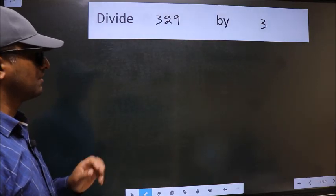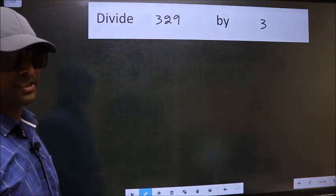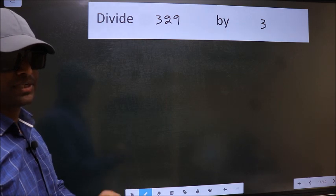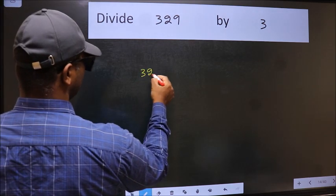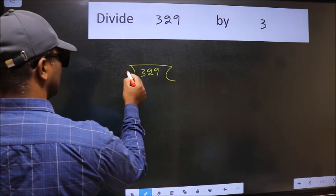Divide 329 by 3. To do this division, we should frame it in this way. 329 here, 3 here.